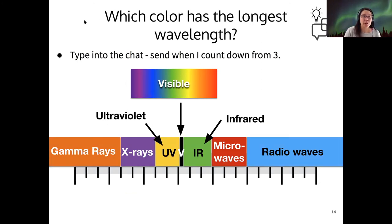So which color in the visible spectrum has the longest wavelength? I'm just going to give you 10 seconds to write this into the chat. Red, orange is close. So the long wavelength side is red and our short wavelength side is in the blue violet.